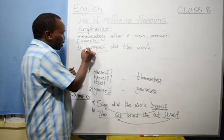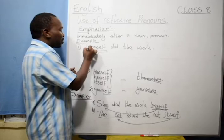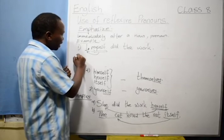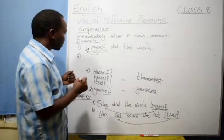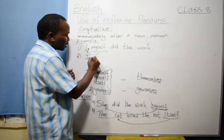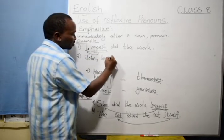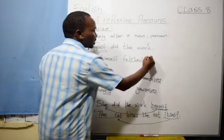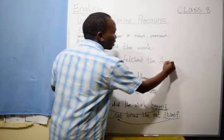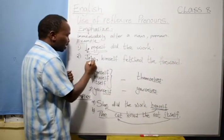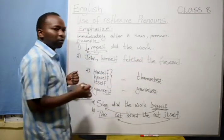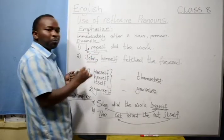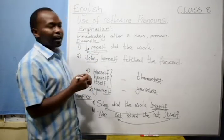And please note. After the pronoun, the first pronoun, before you write the reflexive pronoun, there must be a comma. There must be this comma. Now, let's have another sentence that will guide us in the same. John, comma, himself, fetched the firewood. So, the fetching of the firewood was done by John. Nobody else assisted him in doing the activity.